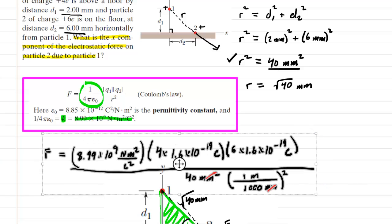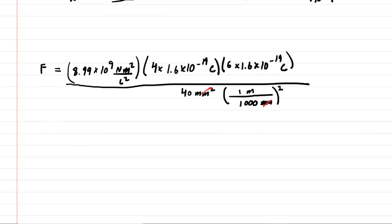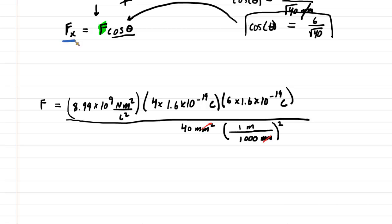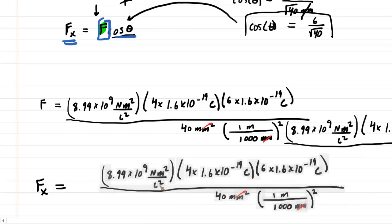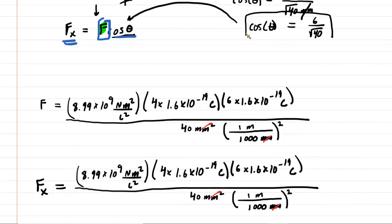And before we compute it, why don't we copy and paste it down below. So there it is. But remember, we only needed the x component. So the x component, fx, was equal to that electrostatic force times the cosine of theta. So the final setup would look something like this. We're going to have fx equals this f expression and then times the cosine of theta. But remember, right up here, the cosine of theta was 6 over the square root of 40. There's the setup. That's going to give us the answer.